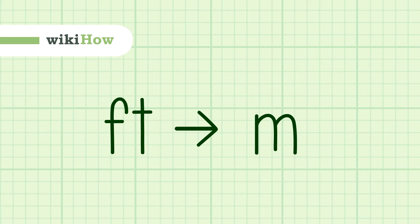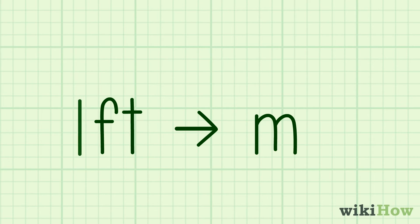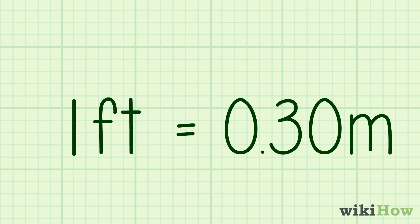To convert feet to meters, all you need to know is that one foot equals 0.30 meters. So you would take your measurement in feet and then multiply it by 0.30 to get the meters.